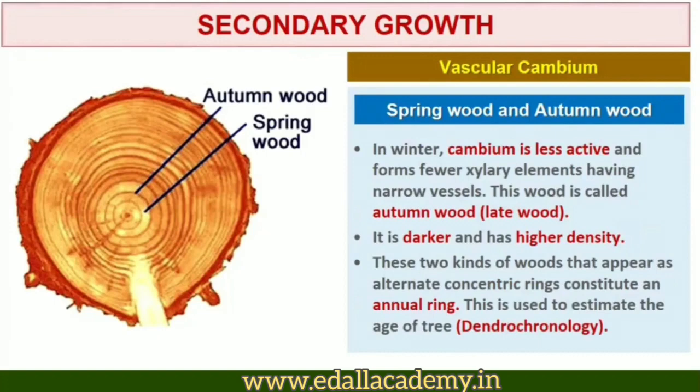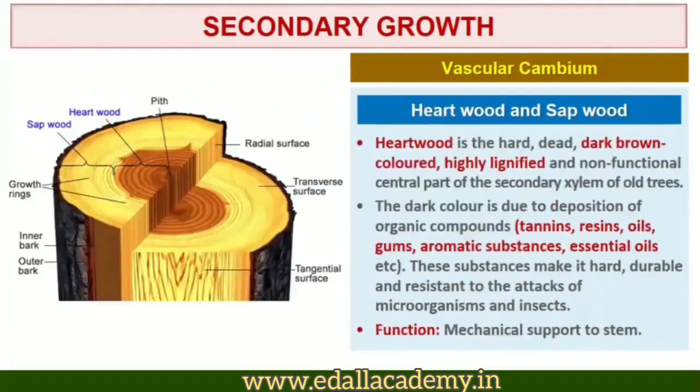Spring wood is lighter in color and has a lower density, whereas autumn wood is darker and has a higher density. The two kinds of wood appear as alternate concentric rings and constitute an annual ring. Annual rings seen in a cut stem give an estimate of the age of the tree.